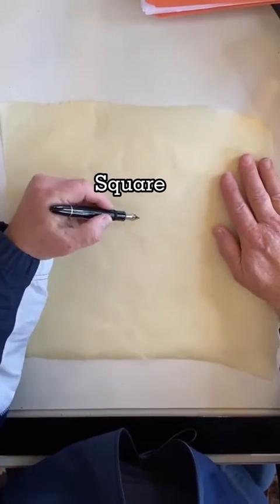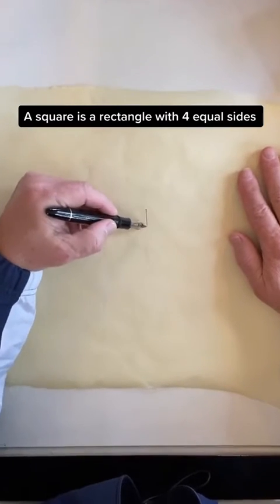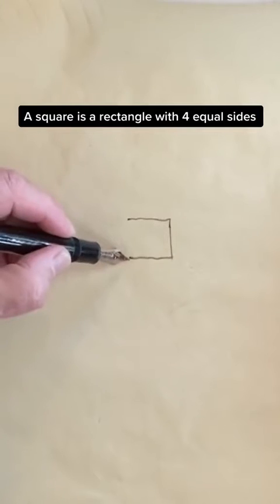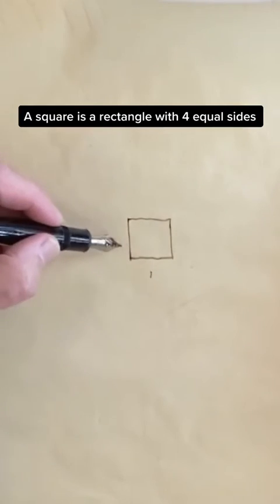First, the square. A square, as everyone knows, is a rectangle with four equal sides, one and one.